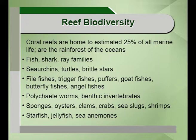Filefishes, triggerfishes, puffers, goatfishes, butterflyfishes and angelfishes are common reef inhabitants. Polychaete worms, benthic invertebrates, sponges, oysters, clams, crabs, sea slugs and shrimps, starfish, jellyfish and sea anemones are also part of reef biodiversity. You can see the number of major genera found and imagine the number of species supported by coral reefs alone.